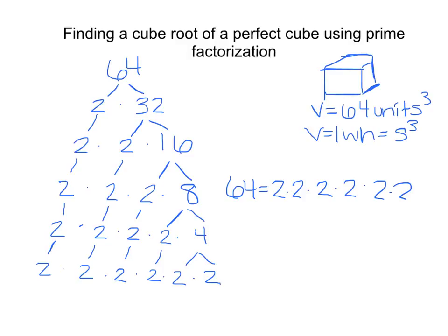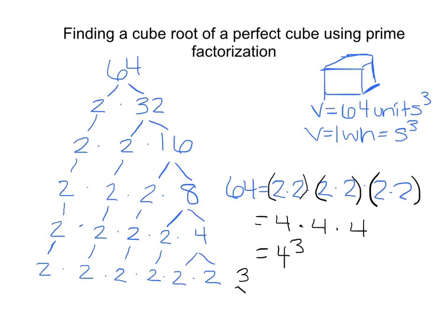Just like we did when looking for a square root using prime factorization, we do the same thing for a cube root. Since I'm looking for a number multiplied by itself 3 times, I'm going to break these six 2's into 3 separate groups. Group 1, group 2, and group 3 — each group has two 2's, which is 4. This means 4 times 4 times 4 equals 64, which is the same as 4 cubed.